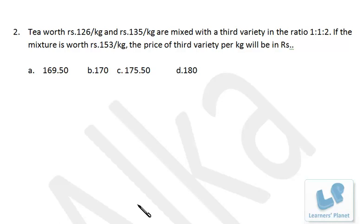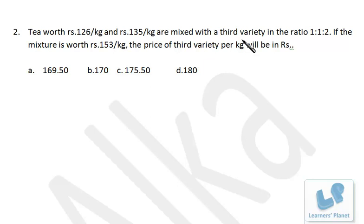In this session I am solving a query sent by a student — a problem based on allegation and mixtures. Tea worth rupees 126 and 135 are mixed with a third variety in the ratio 1:1:2. If the mixture is worth 153, the price of the third variety per kilogram must be in rupees.